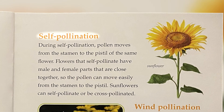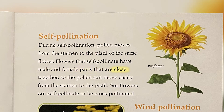Self-pollination: During self-pollination, pollen moves from the stamen to the pistil of the same flower. Flowers that self-pollinate have male and female parts that are close together, so the pollen can move easily from the stamen to the pistil. Sunflowers can self-pollinate or be cross-pollinated.